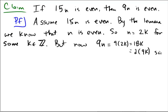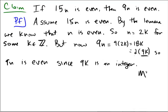So, 9n is even, since 9k is an integer. Remember, to be even just means you have to be equal to 2 times an integer. And k was an integer, so 9k is an integer, so we have 2 times an integer. And that completes the original claim.